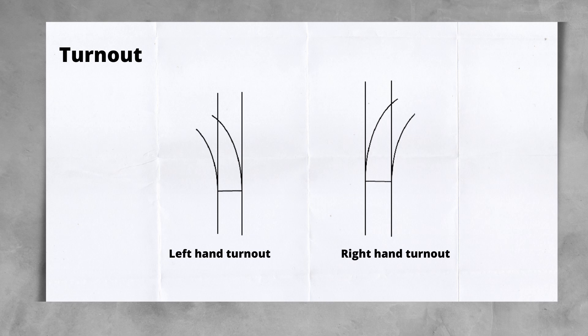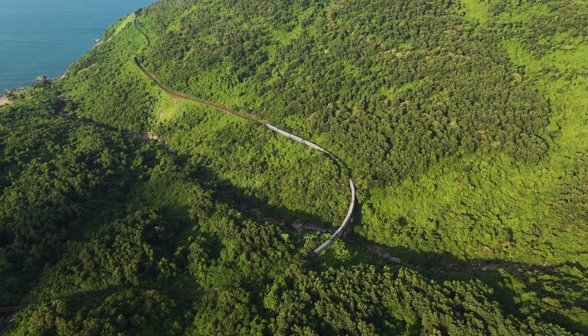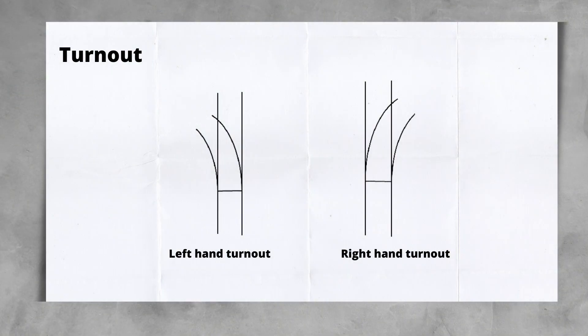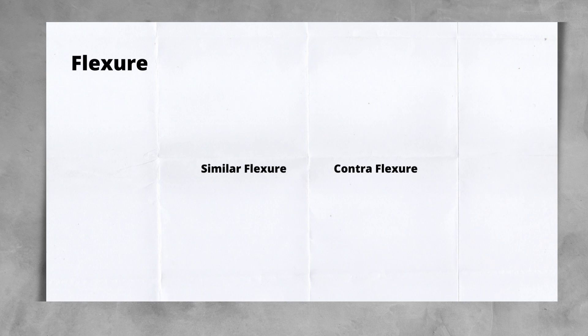Given that not all railway is straight and the placement of junctions can be driven by things such as structures and local topography, it's not always possible to place turnouts where the main line, or the through route, is straight. This brings us to Fletcher, used as a way to describe the relationship between the main and turnout routes if both are curved. There are two types: similar and contra-Fletcher.